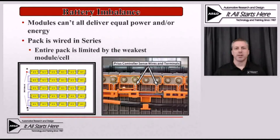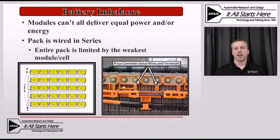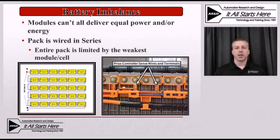Let's start with a battery imbalance. This is one of the more common codes you may see if you have a malfunction indicator warning light on caused by a hybrid battery failure. This occurs when the battery modules can't absorb or deliver energy at an equal rate — that can be either a power imbalance or an energy imbalance. Because the pack is wired in series, the entire pack is limited by the weakest module. The battery has to monitor all modules to ensure they're performing at a very similar level; otherwise the entire battery pack has to be limited to prevent any overcharge or over-discharge of any given module.